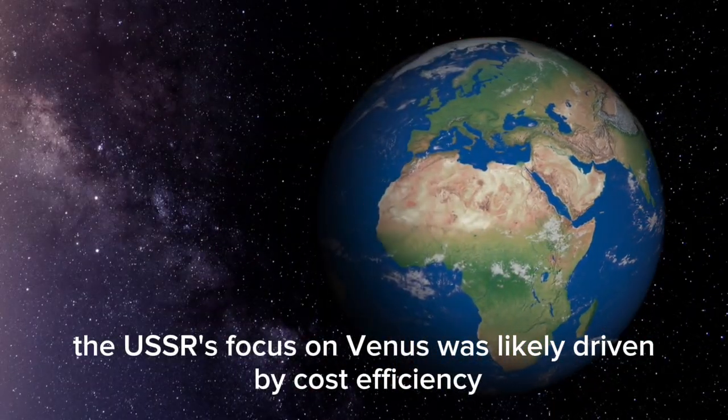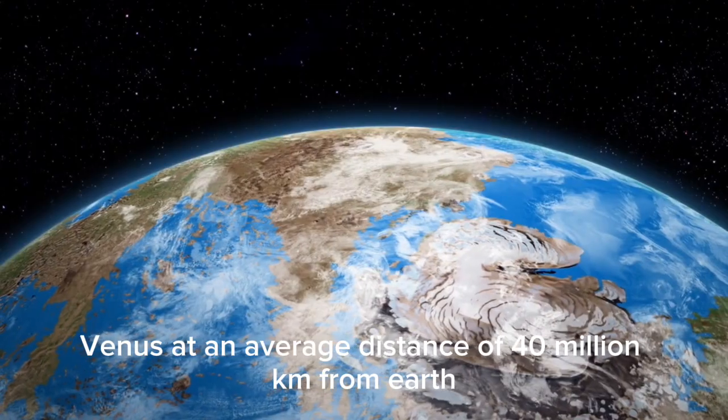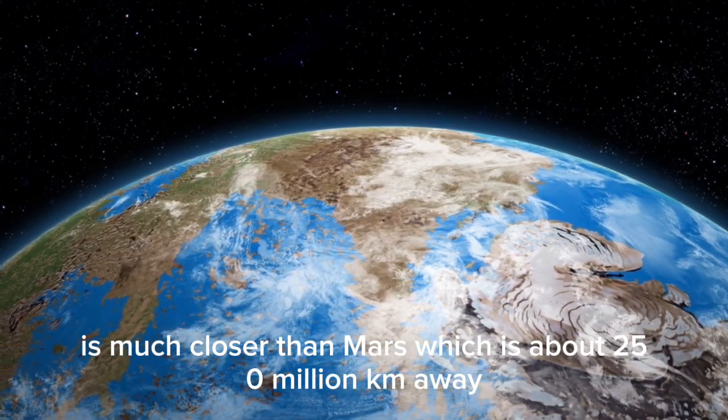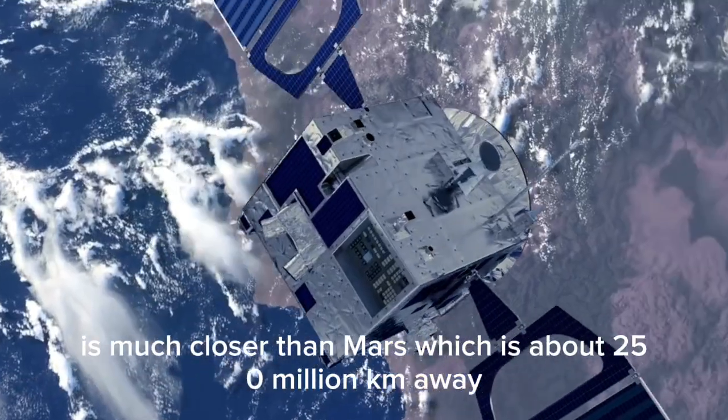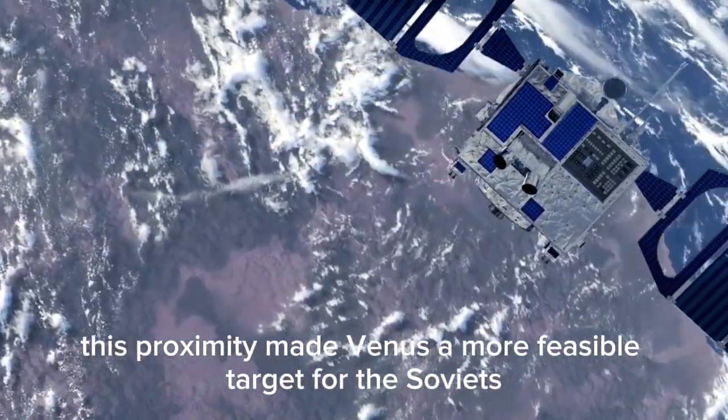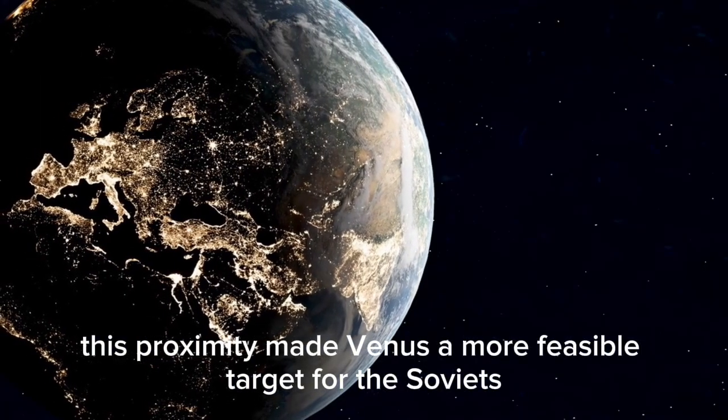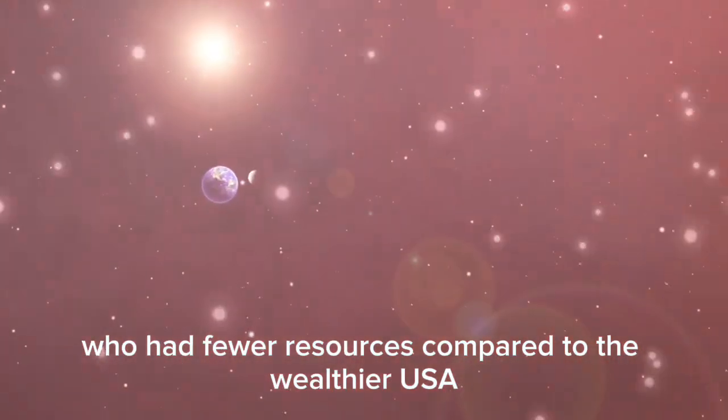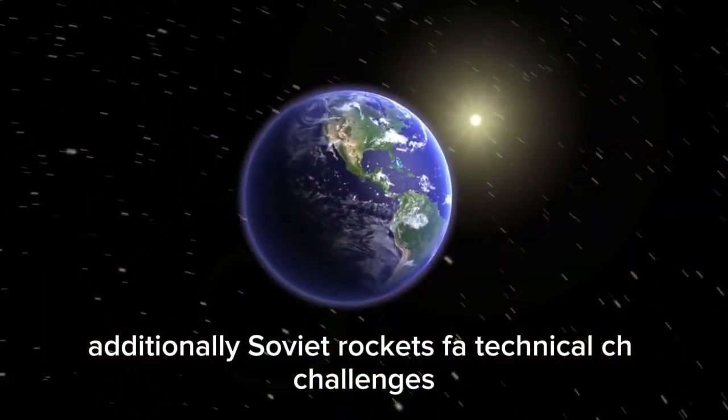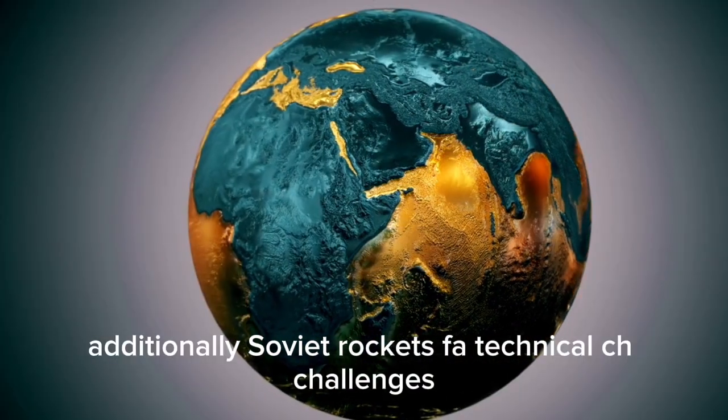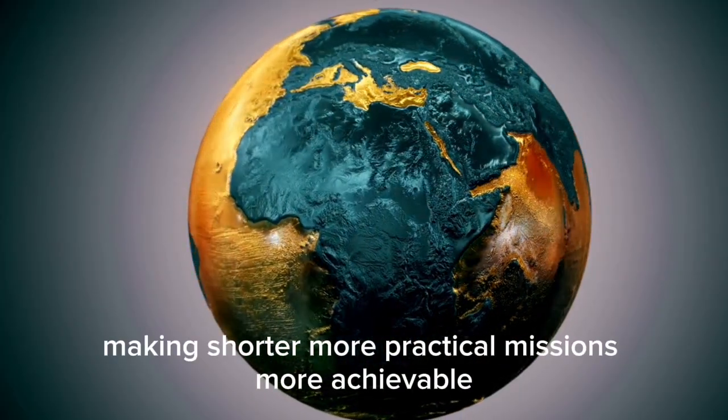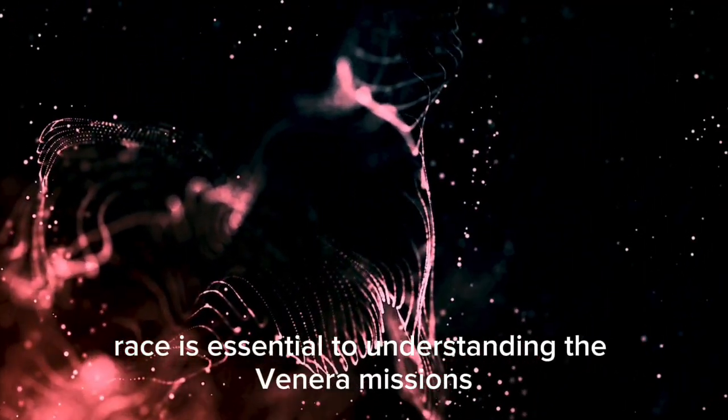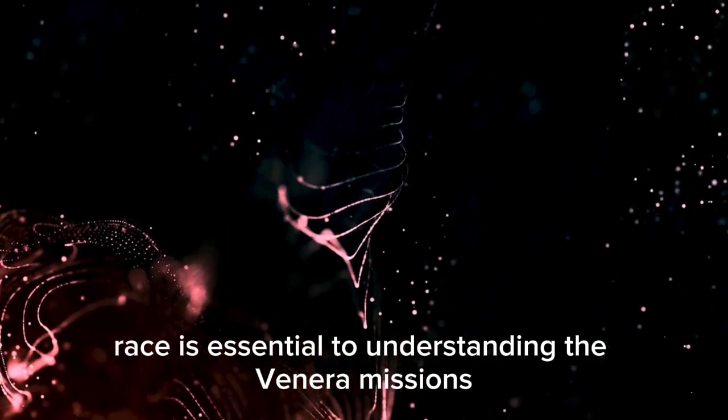The USSR's focus on Venus was likely driven by cost efficiency. Venus, at an average distance of 40 million kilometers from Earth, is much closer than Mars, which is about 250 million kilometers away. This proximity made Venus a more feasible target for the Soviets, who had fewer resources compared to the wealthier USA. Additionally, Soviet rockets faced technical challenges, making shorter, more practical missions more achievable. The context of the Space Race is essential to understanding the Venera missions.